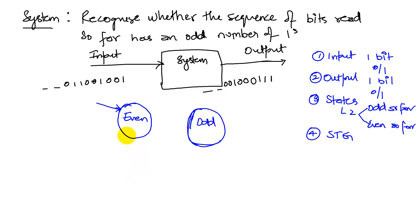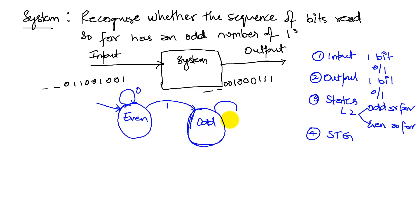The arrows tell me how I transition from one state to another. If I'm in the even state and I read a one, the number of ones so far becomes odd, so I draw an arrow going to the odd state. On the other hand, if I read a zero, I stay in the same even state. The arrows are tagged by the input. Now from the odd state: if I read a zero, I remain in odd. If I read a one, I transition to the even state, because two ones make it even.